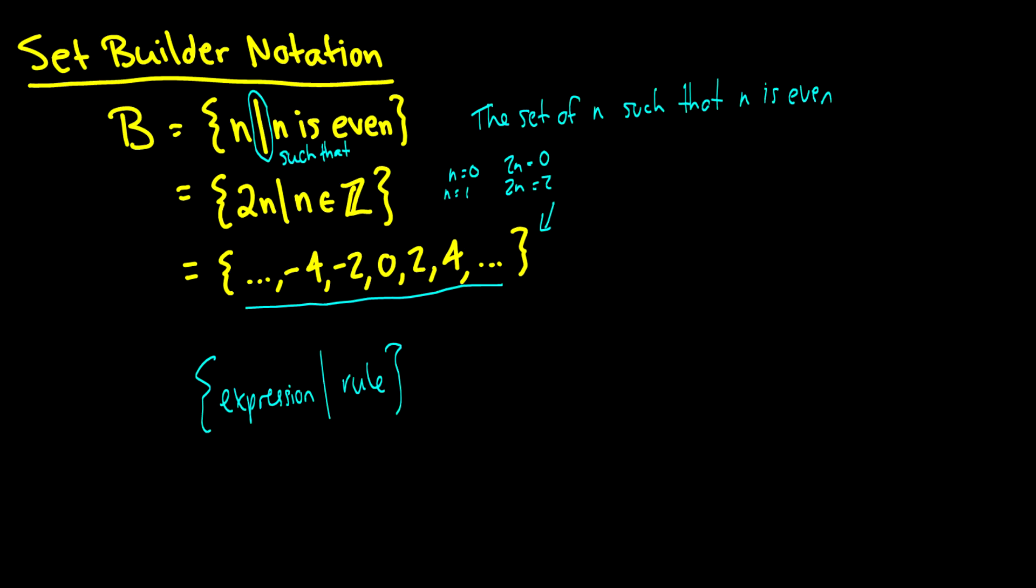So if this is our rule, N is even, then for all N that is even it will be in the set. And that is a nice way of doing it. So if we want to build the set of all prime numbers, we can say that our set P is the set of K such that K is prime.